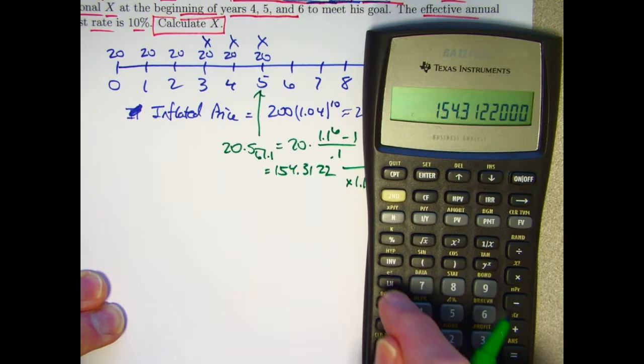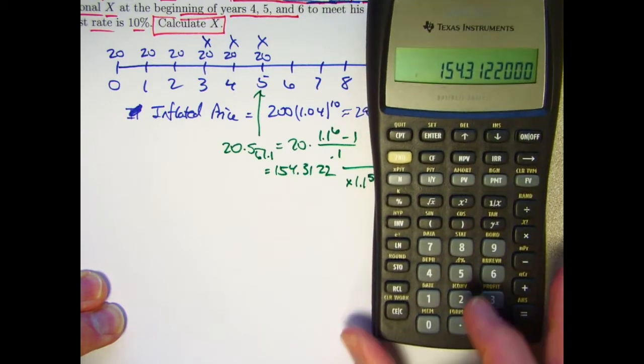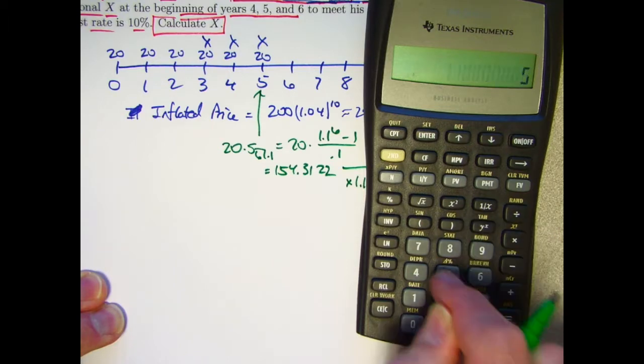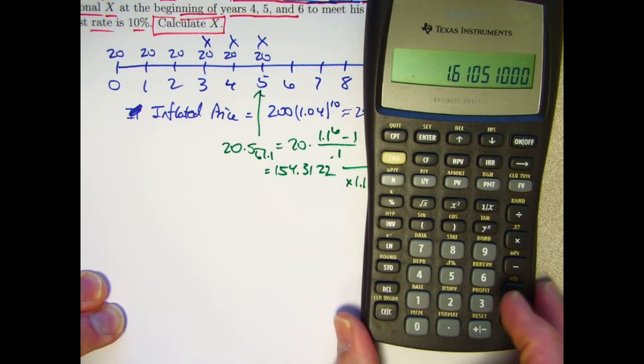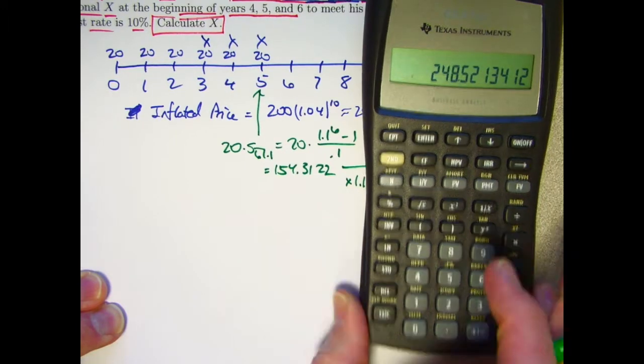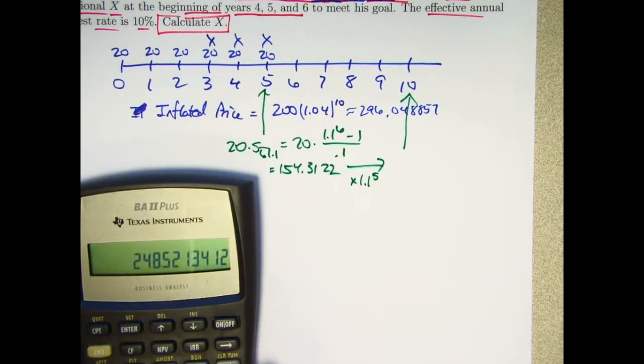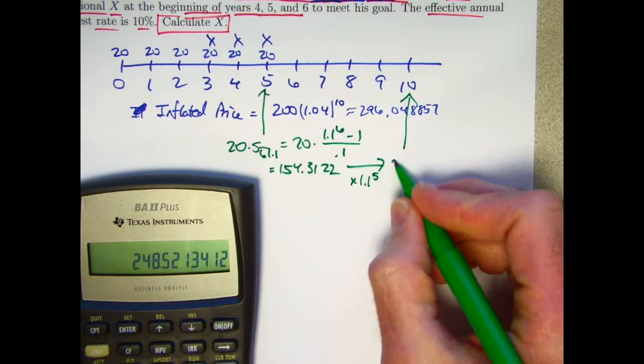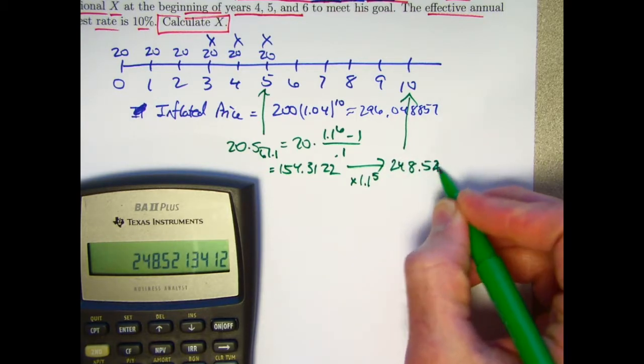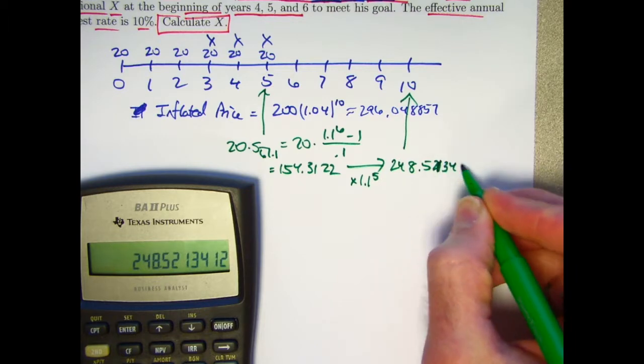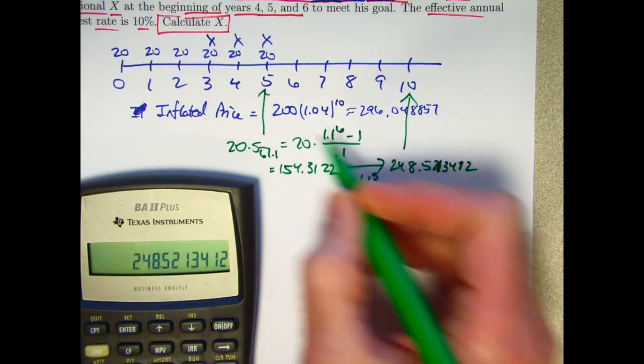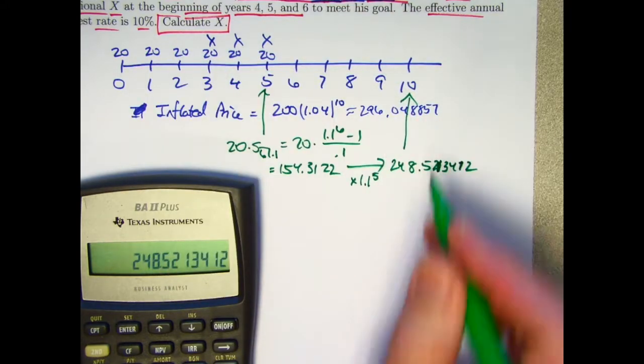Let me go ahead and store this, store it in register 0. 1.1 to the 5th power is this. Multiply it by what I just stored in register 0. 248.520.5213412 is the future value of the 20s at time 10.